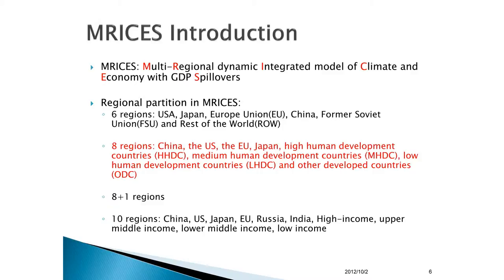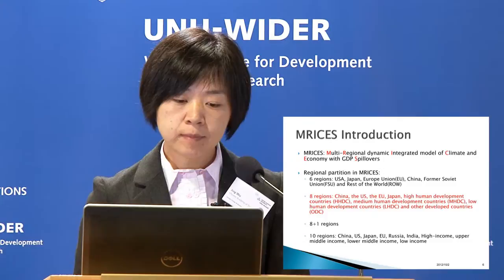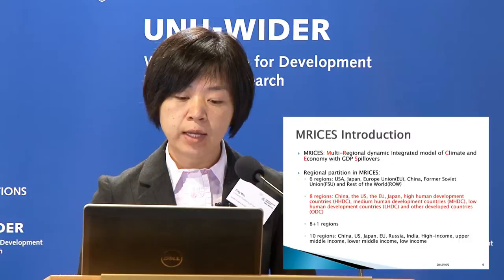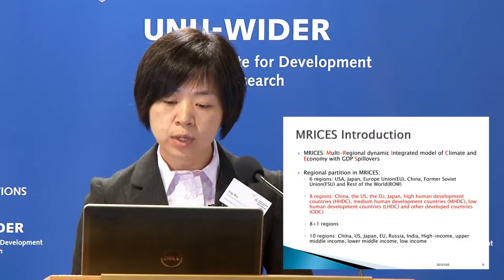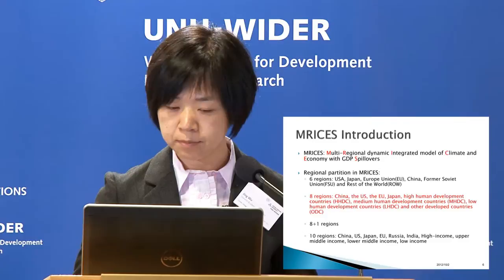Based on the model presented by Nordhaus, we improved it and named our model MRACE: the Multi-Regional Dynamic Integrated Model of Climate and Economy with GDP Spillovers. We have developed several variants with different regional segments — six regions, eight regions, eight plus one regions, and ten regions. The work introduced here is based on eight regions: China, the US, the EU, Japan, high human development countries, medium human development countries, low human development countries, and other developed countries.